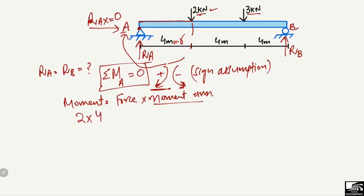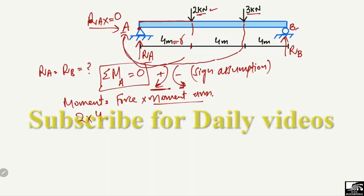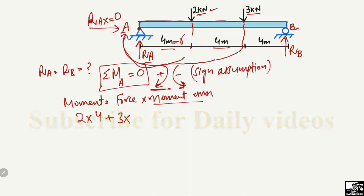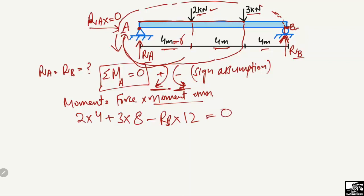The 3 kN load also creates a clockwise moment about A, so it is also positive. Its moment arm is 4 + 4 = 8 meters, giving the term +3 × 8. The reaction RB acts upward, creating an anticlockwise moment about A, which is negative: −RB × 12 meters (4 + 4 + 4). Setting the summation equal to zero.